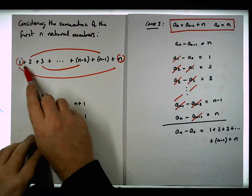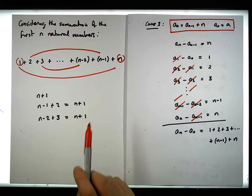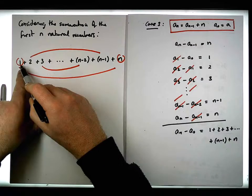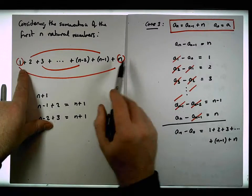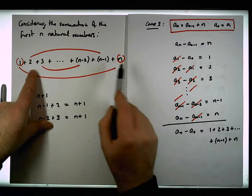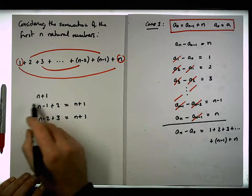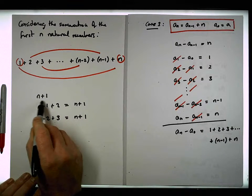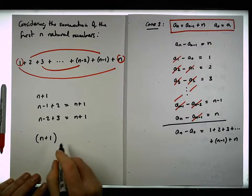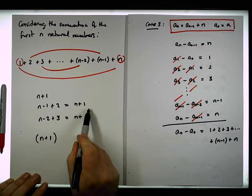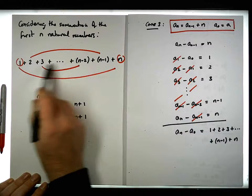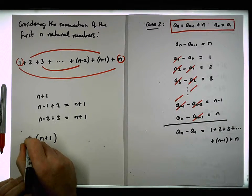Now, if there's n numbers in the series, there must be n divided by 2. If there's n numbers in the series, the number of pairings that we can do is half that amount. So this particular sequence of n plus 1 ones—how many of them are there? Well, if we did this for all of the numbers in the sequence, there would be n over 2 of them.